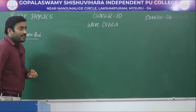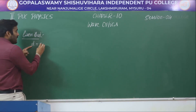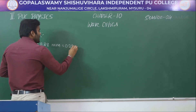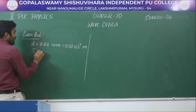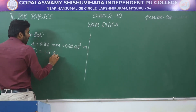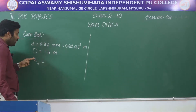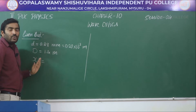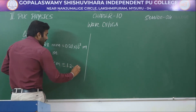First, let us write what are the given things. The distance between the two slits, small d, is given as 0.28 millimeter, which is 0.28 × 10⁻³ meter. Capital D, the distance between the slits and the screen, is 1.4 meter. The position of the 4th bright fringe from the central maximum is given as 1.2 centimeter, which is 1.2 × 10⁻² meter.